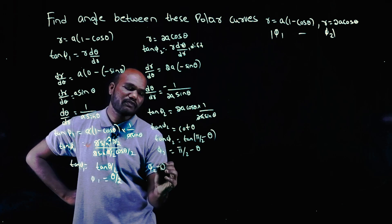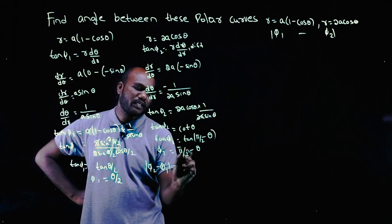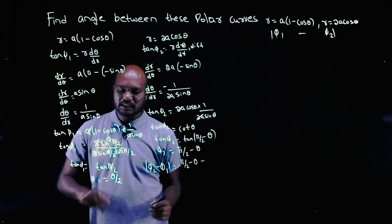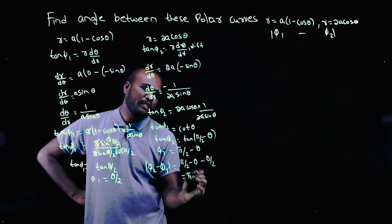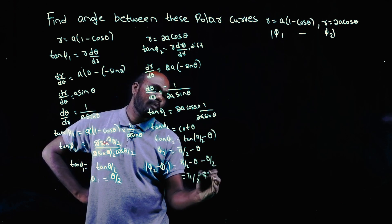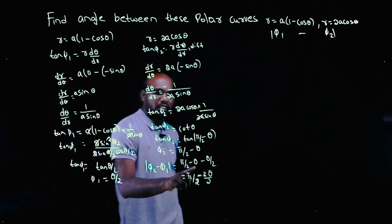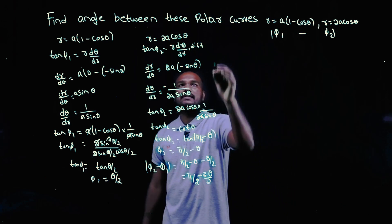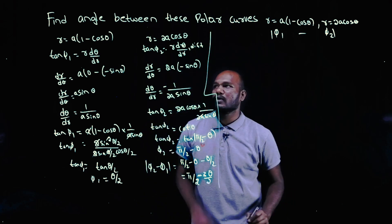Now φ₂ - φ₁ is what we want. φ₂ = π/2 - θ, and φ₁ = θ/2. So φ₂ - φ₁ = π/2 - θ - θ/2 = π/2 - 3θ/2.